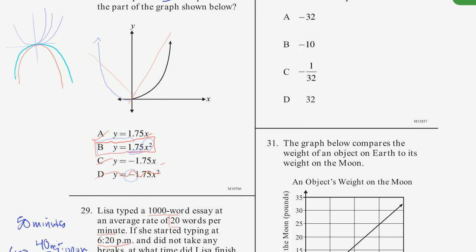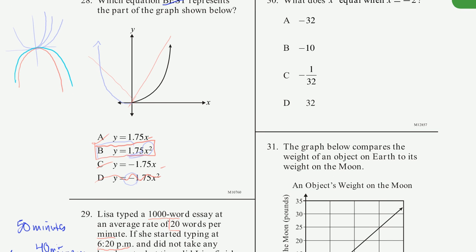Problem 30: What does x to the fifth equal when x = −2? So it's (−2)×(−2)×(−2)×(−2)×(−2). Multiplying out: (−2)×(−2) = 4; 4×(−2) = −8; (−8)×(−2) = 16; 16×(−2) = −32. So the answer is A, which is −32.